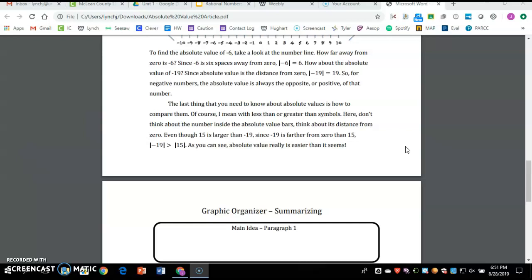Even though 15 is larger than negative 19, since negative 19 is farther from zero than 15, the absolute value of negative 19 is greater than the absolute value of 15. As you can see, absolute value really is easier than it seems.